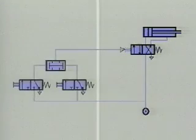Let's take a look at the structure of circuits with different types of control. Here we have the manual operation of a directional control valve as a final control element.